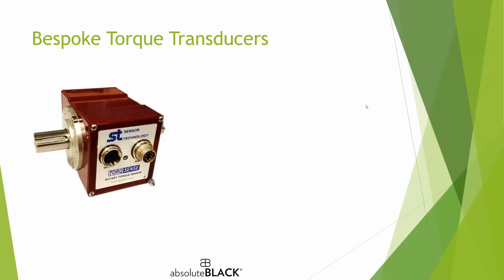The bespoke torque transducers were made by Sensor Technology specifically for this purpose and provide three important pieces of information for this application. Accuracy — not the most critical here — is still 0.1% of the full scale of measurements. More importantly, even with just two sample measurements, we achieve a repeatability of 0.05%. We can also detect changes as small as 0.01% — that's the sensitivity, referring to the smallest difference we can detect. This is far more than what's required for our application, making these sensors the best choice for our device.